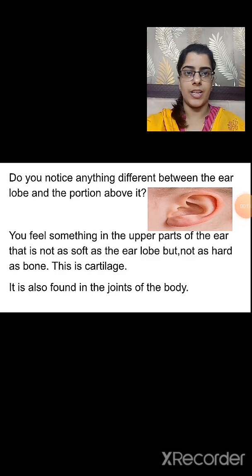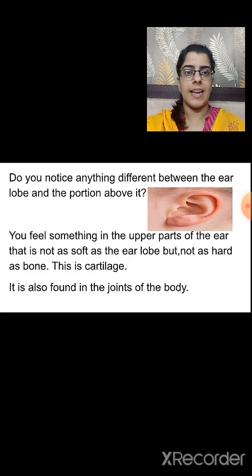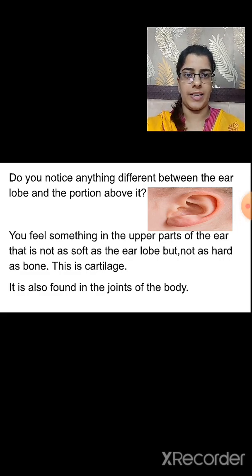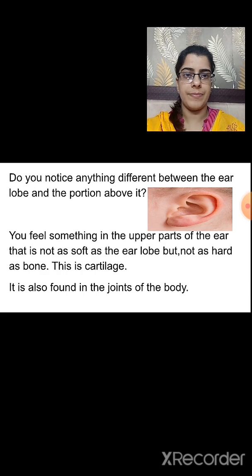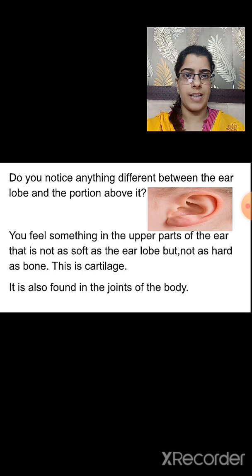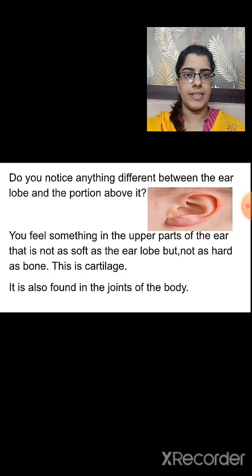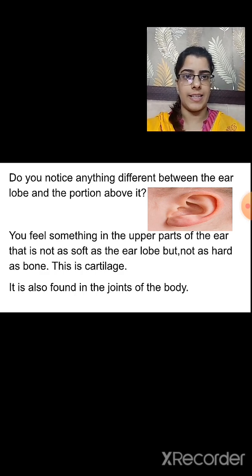In this session we have studied two different joints — the hinge joint and the fixed joint. We also studied about carpals, vertebrae, ribcage, skull, and cartilage. I hope you have understood the chapter up to this point. We will continue with this chapter in our next session.